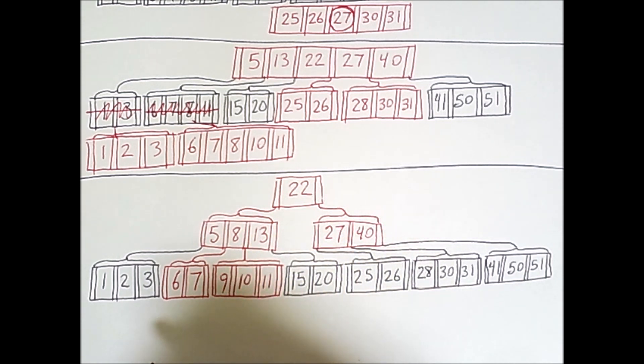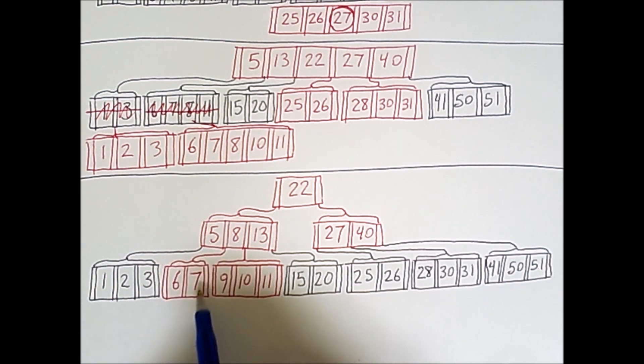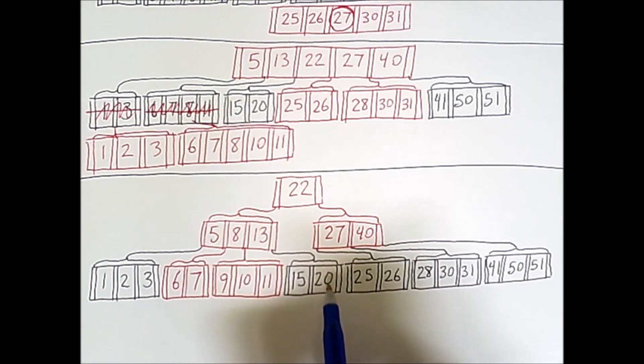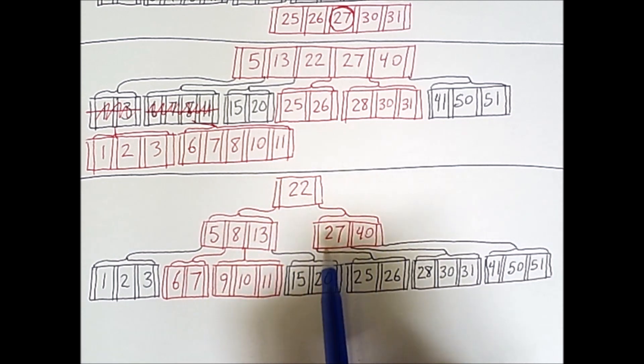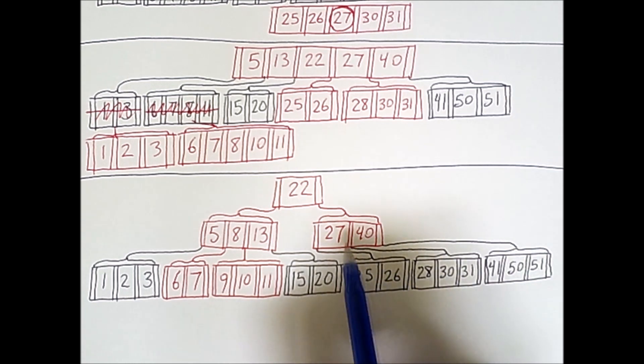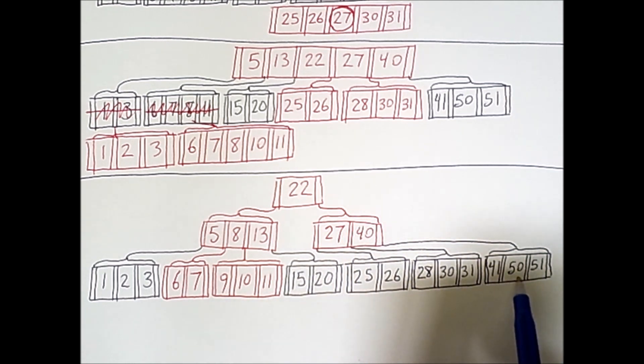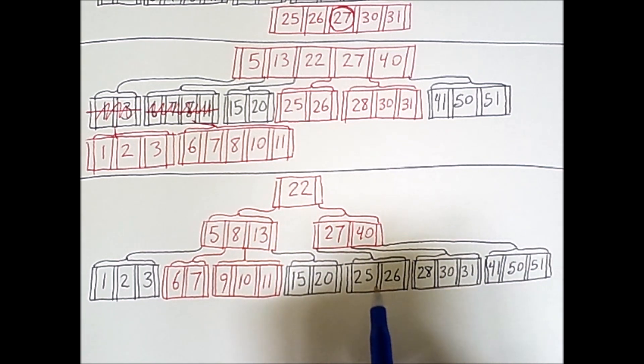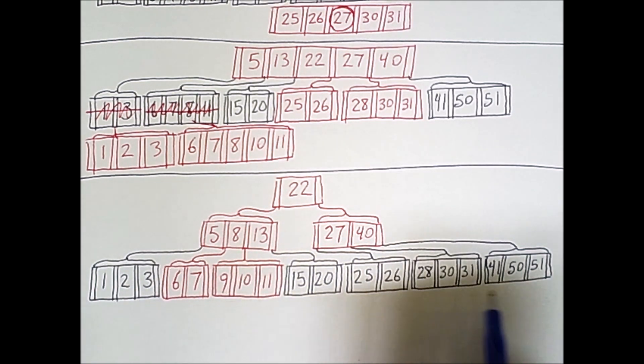The final result is a tree that is still balanced, so we have 1 through 3, 5, 6, 7, 8, 9, 10, 11, 13, 15, 20, then 22, then 25, 26, 27, 28, 30, 31, 40, 41, 50, 51. So all these values are still in order, and the tree is still balanced because all of these leaf nodes are at the same level.